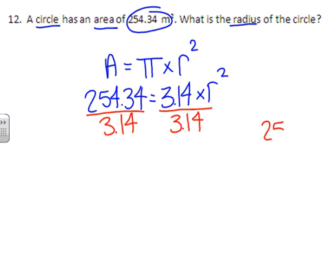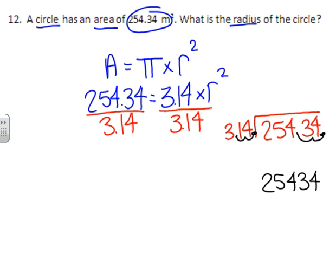This time we're going to divide by 3.14 is our first step. So 254.34 divided by 3.14. Remember, any time we're dividing by a decimal, we want to move our decimal over until we get a whole number. So really, we're doing 25,434 divided by 314.